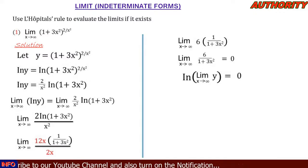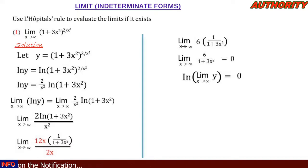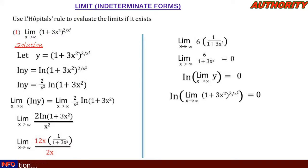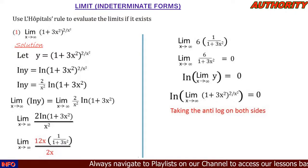Now for the left-hand side: we have ln of the limit as x approaches infinity of y equal to 0. Let's replace y back — so ln of the limit as x approaches infinity of (1 + 3x²) raised to the power 2 over x squared equals 0. From the beginning we took the natural log, so now let's take the anti-log to remove the log.